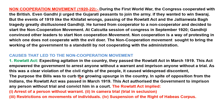This was a clear violation of the civil rights of the people and it caused widespread discontent. The purpose of the bill was to curb the growing surge of unrest in the country. In spite of opposition from the Indians, the Rowlatt Act was passed in March 1919, authorizing the government to imprison any person without trial and convict him in a court.